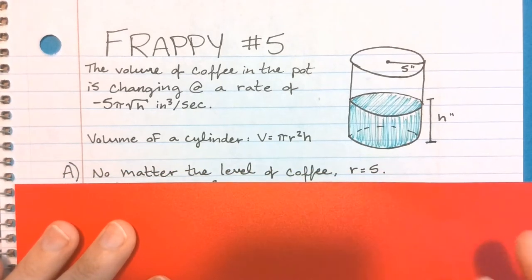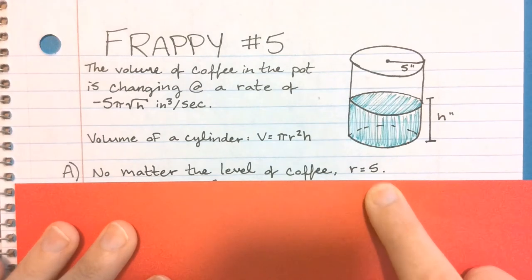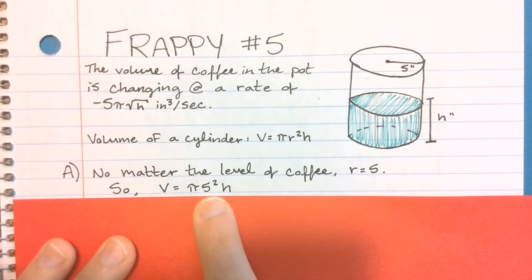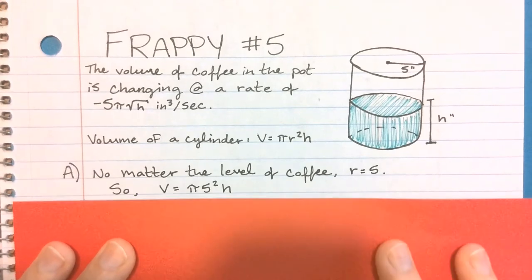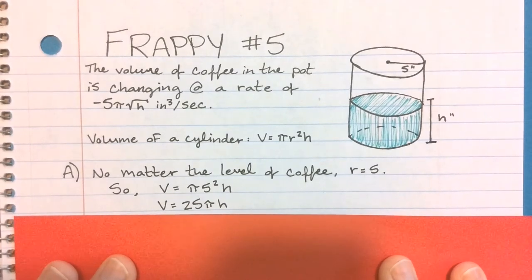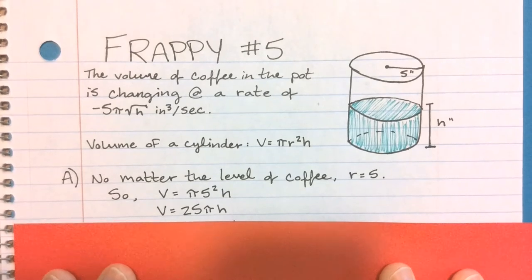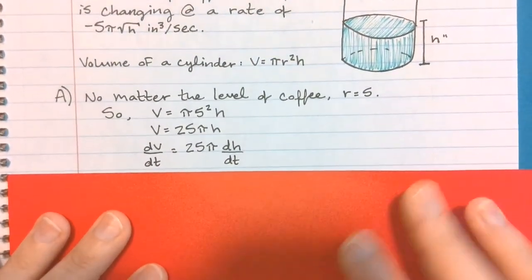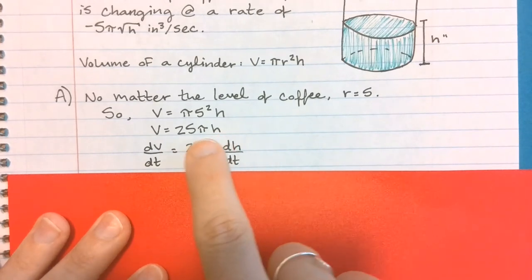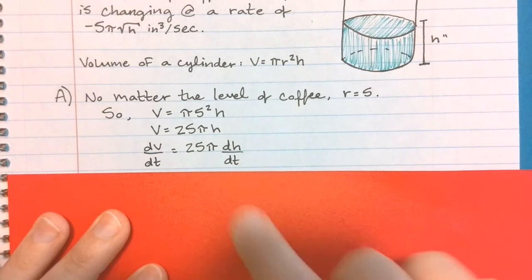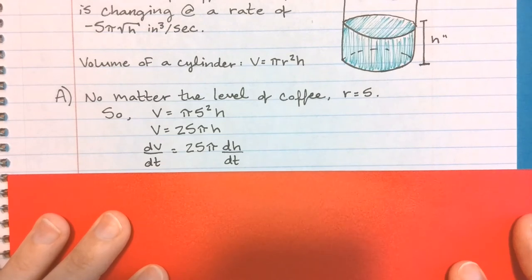Before I take the derivative, if that radius doesn't ever change, I can go ahead and put it into the volume because it's not going to have a dr/dt. So now I have that the volume is 25πh, and that's going to make it a lot easier. When I find the derivative, I've got my dv/dt equals 25π dh/dt. Remember, my derivative is just going to be the coefficient, just like if I had 3x it would be 3, but then I take the derivative of h, which is that dh/dt.